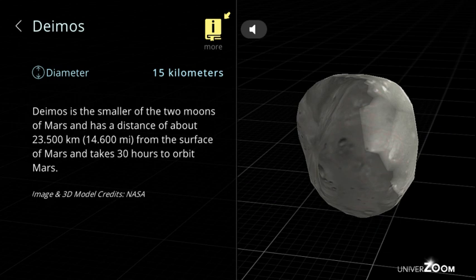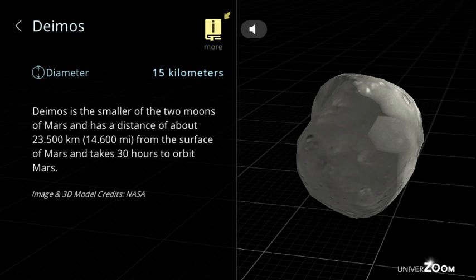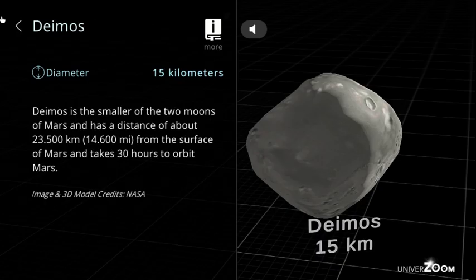Deimos, diameter: 15 kilometers. Deimos is the smaller of the two moons of Mars and has a distance of about 23,500 kilometers from the surface of Mars and takes 30 hours to orbit Mars.